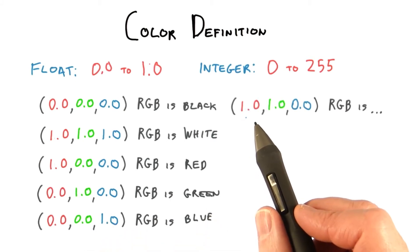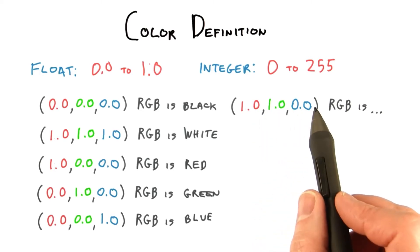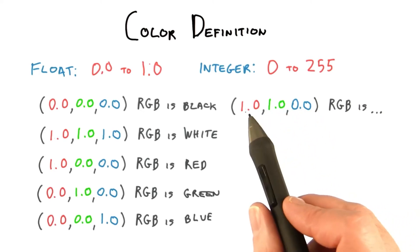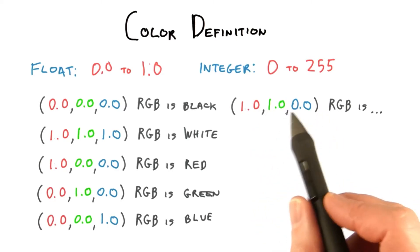Where things go off the tracks for some people is when we set a color as follows: RGB of 1, 1, and 0. This is to make a color using the red and green channels at their maximum and with no blue.